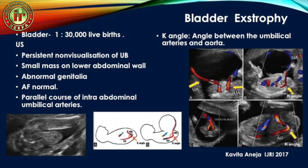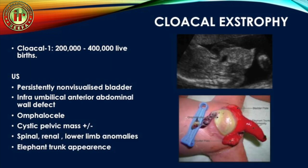These images from Dr. Aneja's publication show the acute angle at the umbilical artery-aorta junction in a normal fetus, while in bladder exstrophy the angle becomes obtuse. On the axial section, you can see the parallel course of the intra-abdominal umbilical arteries instead of the normal converging course.